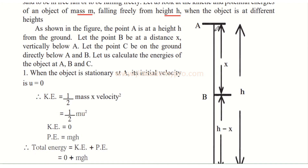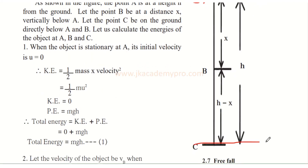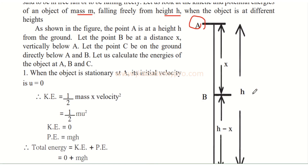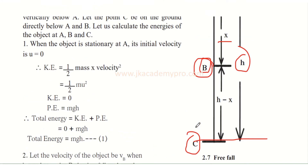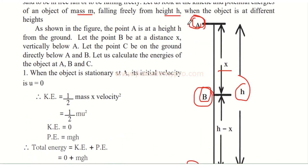As shown in the figure, point A is at a height h above the earth's surface (point C). Let point B be at a distance x vertically below point A. Let point C be on the ground directly below points A and B. We will calculate the energies of the object at A, B, and C.